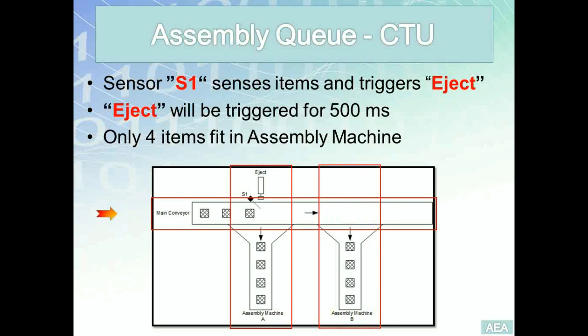A number of items traveling on the main conveyor will be sensed by an infrared sensor S1, which in turn is going to trigger an eject solenoid in order to push these items into the side assembly machines A and B.